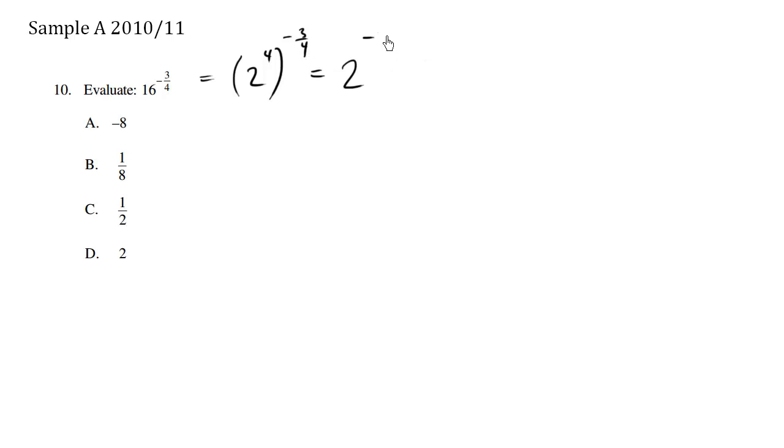So this here is 2^(-3), which is the same thing as 1/(2^3). This is exponent laws. If we want to get rid of the negative sign on the exponent, we simply do the reciprocal. We move it down and get rid of the negative sign.